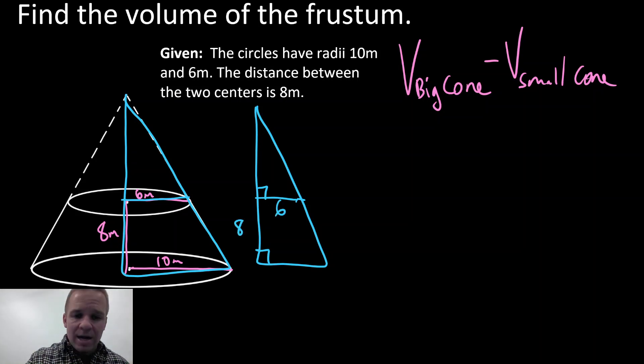So I have 6 here, I've got 8 here, I've got 10 here. And if I were to find this X here, that's the height of my small cone. It's also the height of the big cone when I add 8 to it. So I'm in the money if I can get that dimension right there.